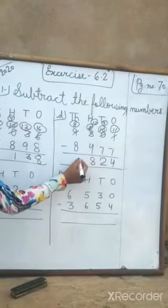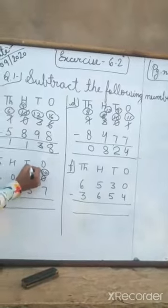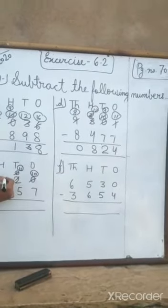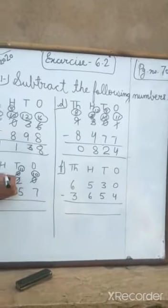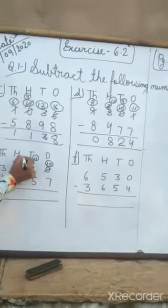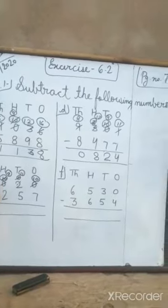Next, 0 minus 7. We will borrow, so 0 becomes 10. Here is 2, here is 1. 1 minus 5 will not be possible, so we will borrow. Here is 11, here is 7. And here will be 10, here will be 10, here will be 9, and here will be 2.